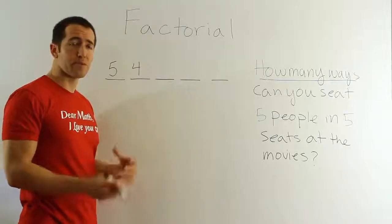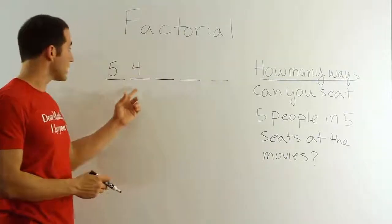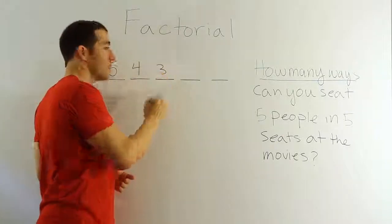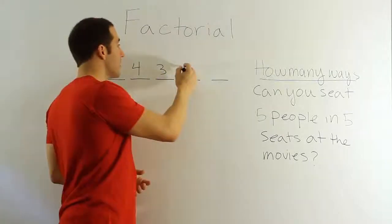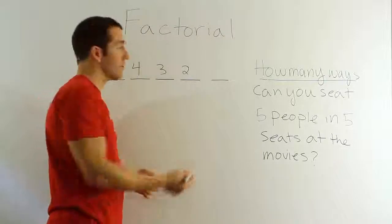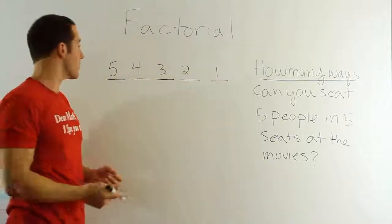All right. The third step of the process is we're going to seat the third seat. But by now, we've already sat two of the people, so there will only be three people left, and then there will only be two people left, and then lastly, only one person left for the last seat. So that's the logic of the problem.